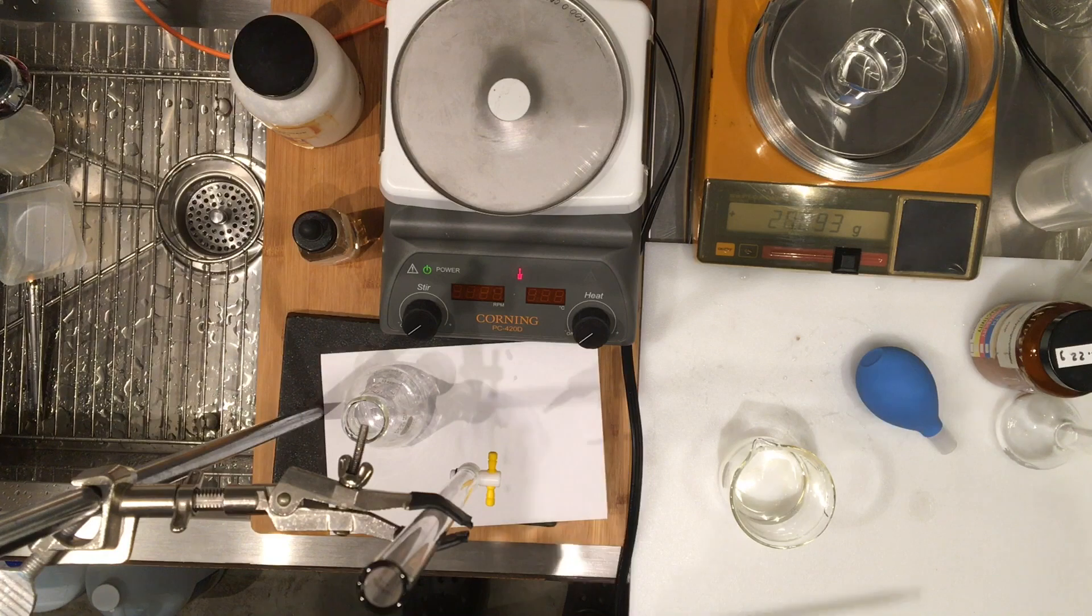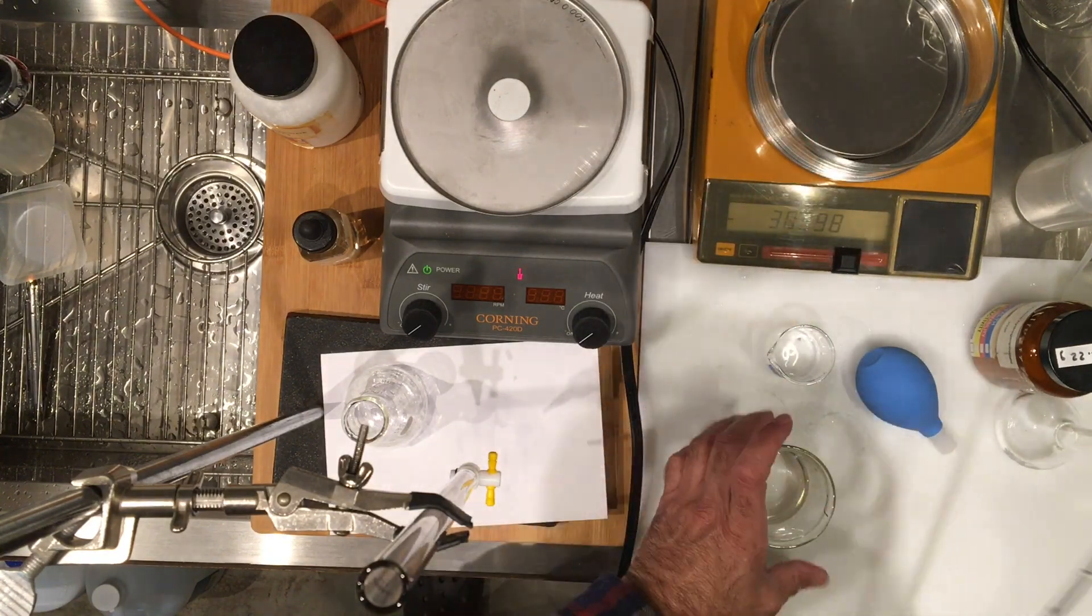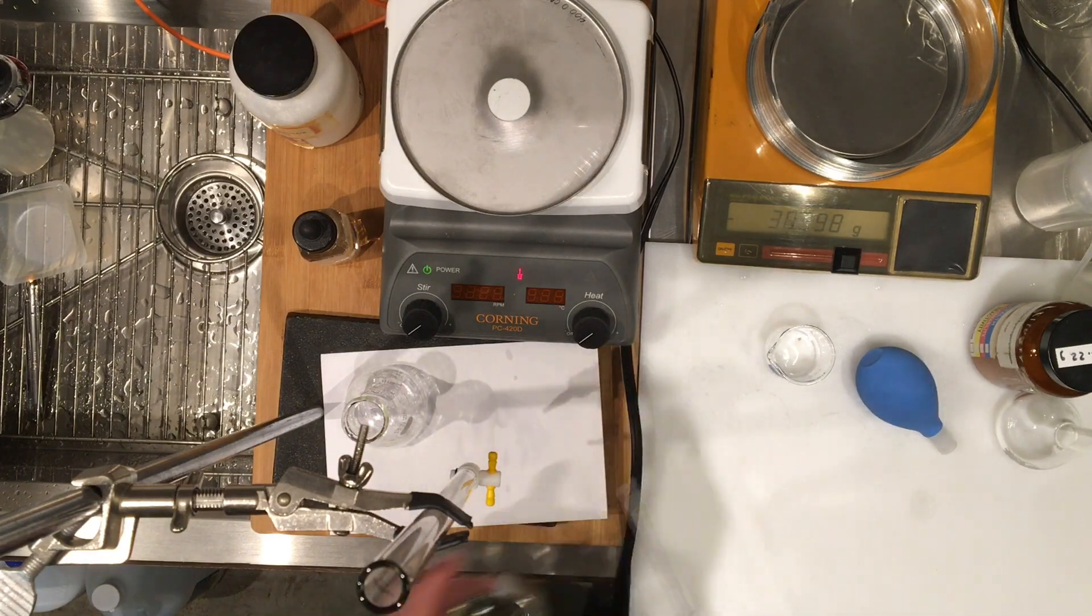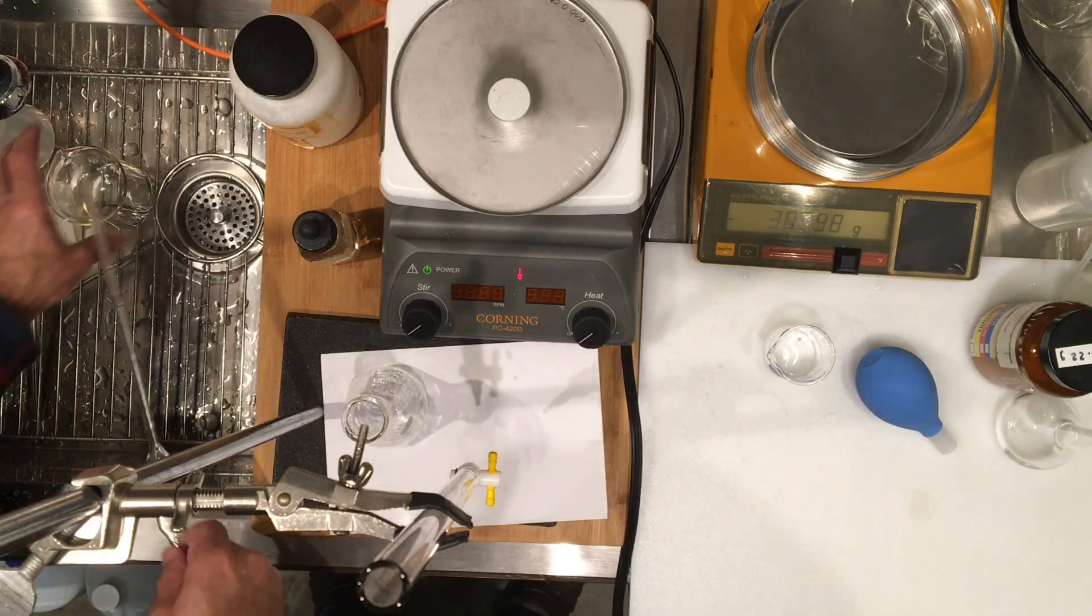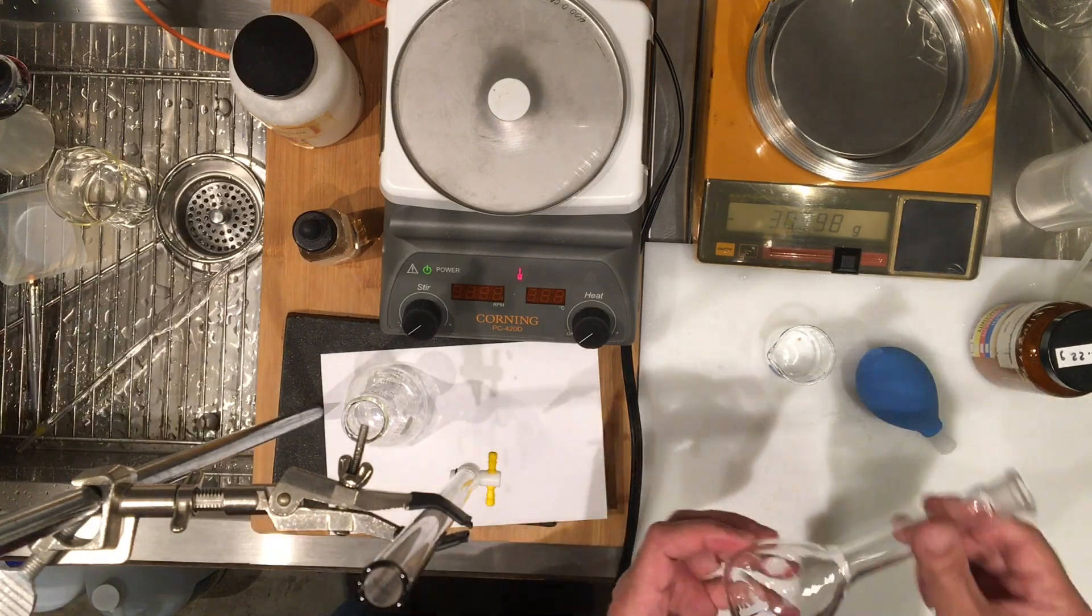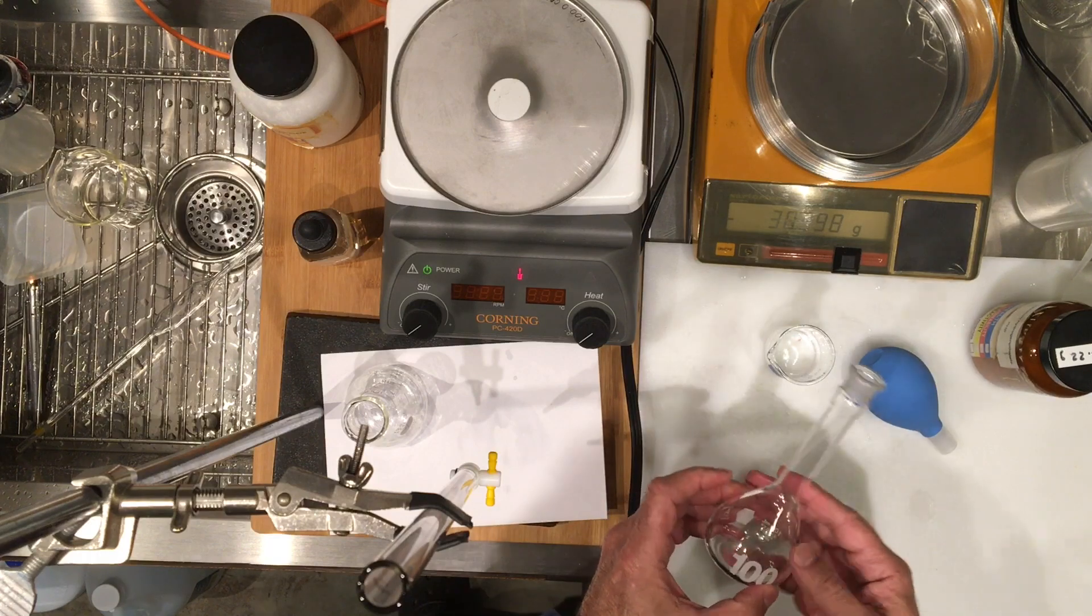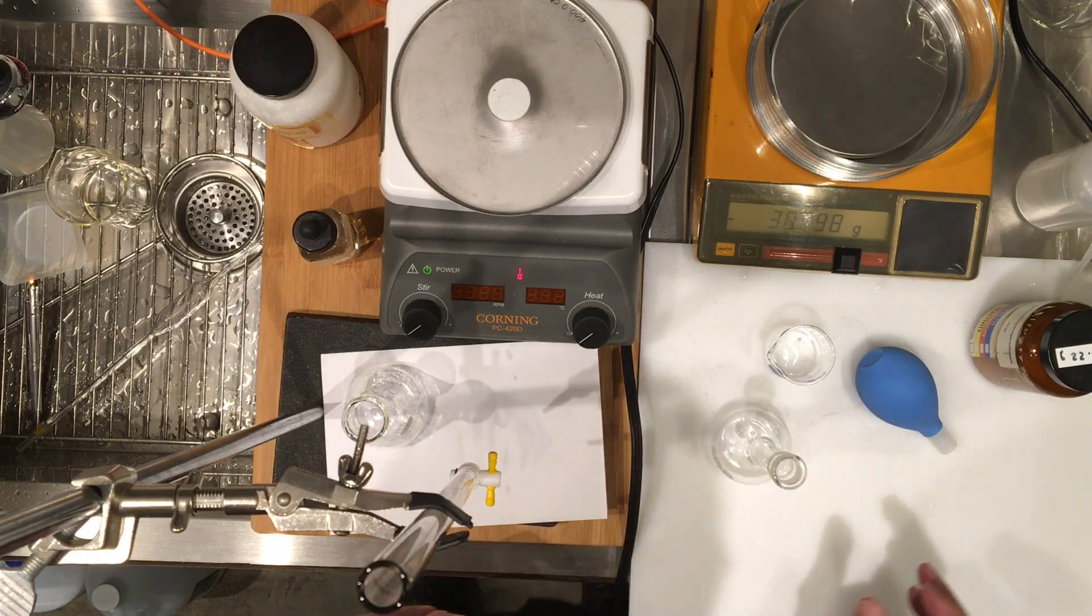So, we have this mass now, we're going to take this mass, or the 20 milliliter, and we're going to transfer it to a clean, and not necessarily dry, because I'm going to be adding water, a 100 ml volumetric flask.